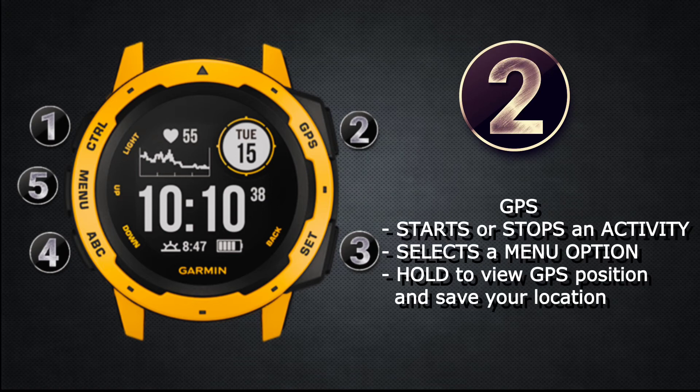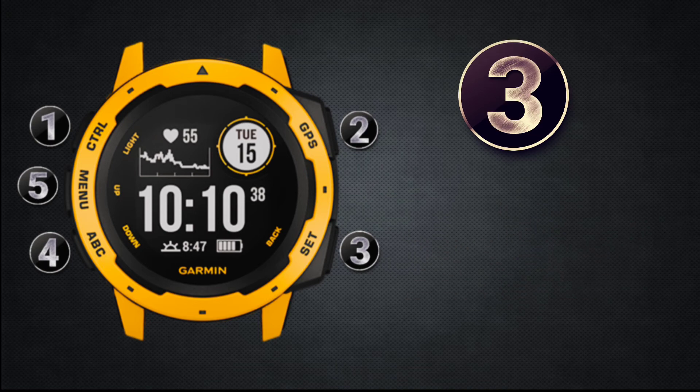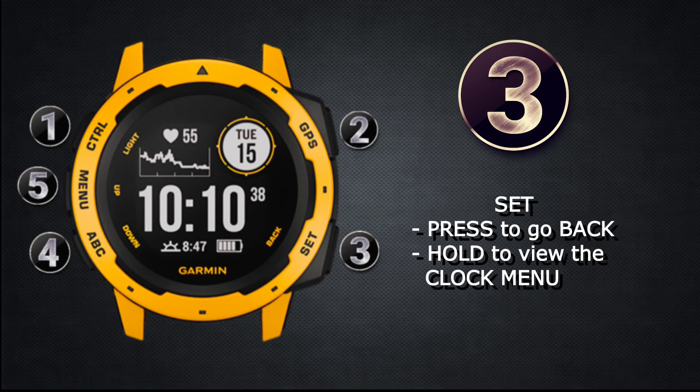The number two button is the GPS button. It's used to view the activity list or start and stop an activity. It also acts as the select button to choose an option in a menu. Press and long hold this button to view your GPS position and save your location.